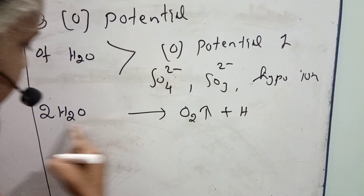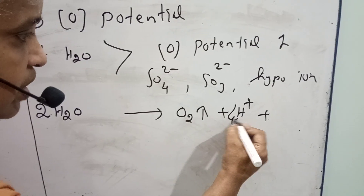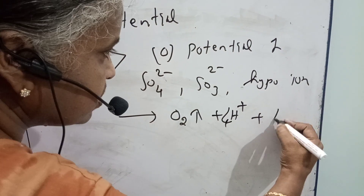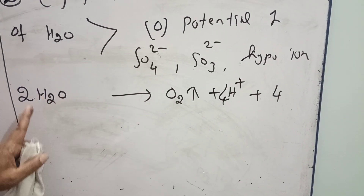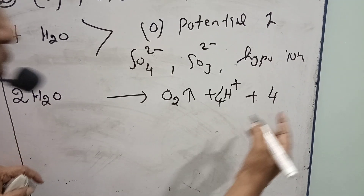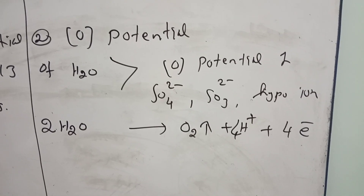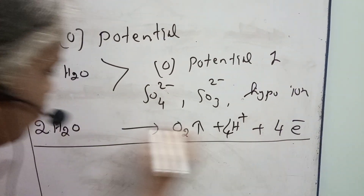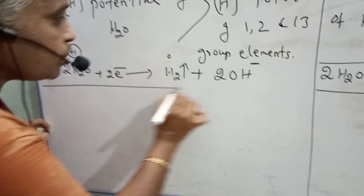So the oxidation reaction of water: 2H₂O → O₂ + 4H⁺ + 4e⁻. This reaction is also very important. And this is the reduction of water. Both reactions are very, very important for MCQ questions.